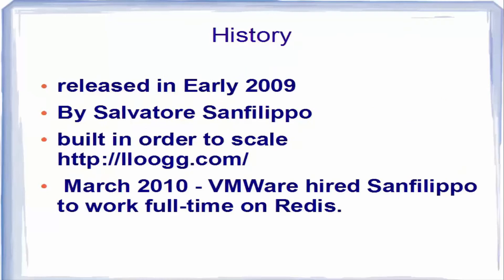In early 2009, an Italian developer called Salvatore Sanfilippo started the Redis project while working on a real-time web analytics solution, finding that MySQL could not provide the necessary performance. In June 2009, Redis was deployed in production for a website called LLOOGG.com. In March 2010, VMware hired Sanfilippo to work full-time on Redis, though it remained BSD licensed.